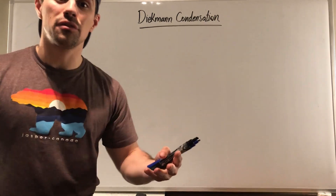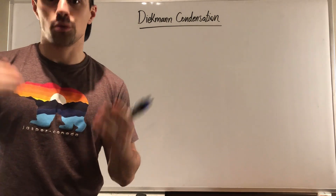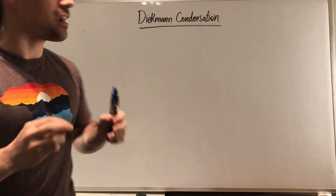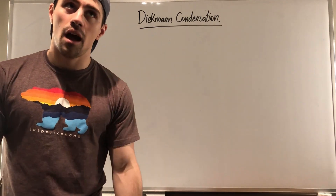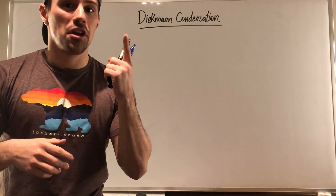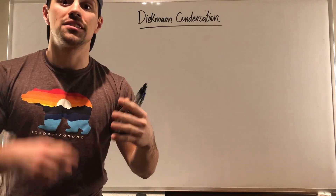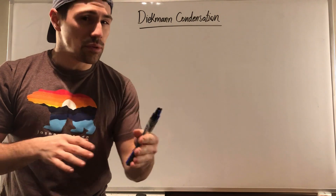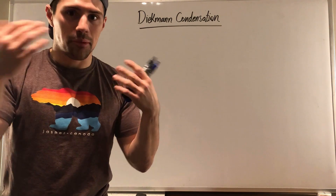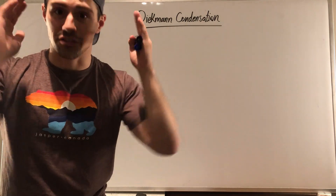Hey gang, welcome back for another video here on Jochem. This video will be a little bit on the shorter side. Even though you see a different reaction up there, luckily you already know everything I'm about to talk about. The Dieckmann condensation is just a Claisen condensation that makes a ring — one of the few times in organic chemistry where someone got a name on their reaction, but one where we basically already know what's going on.